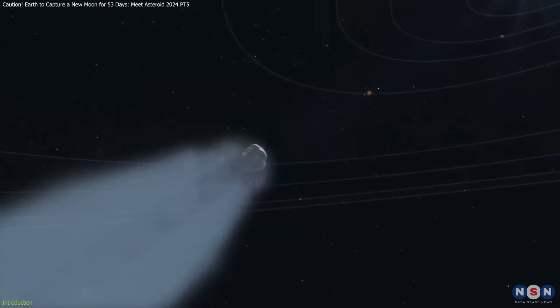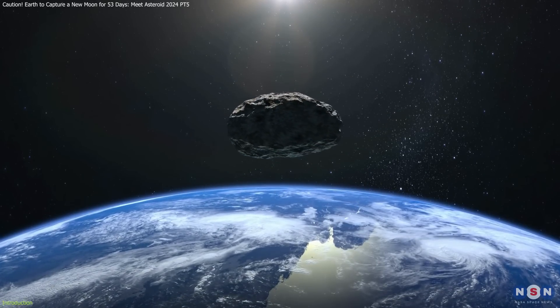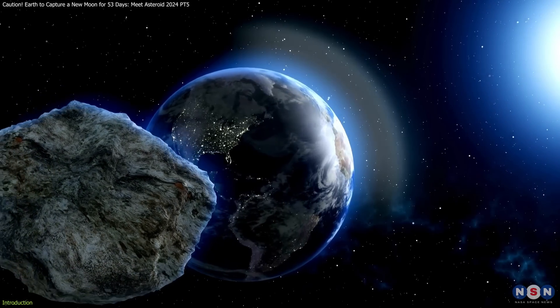This is the story of 2024 PT5, a small asteroid set to become a temporary mini-moon of Earth for about 53 days, starting from the end of September 2024.